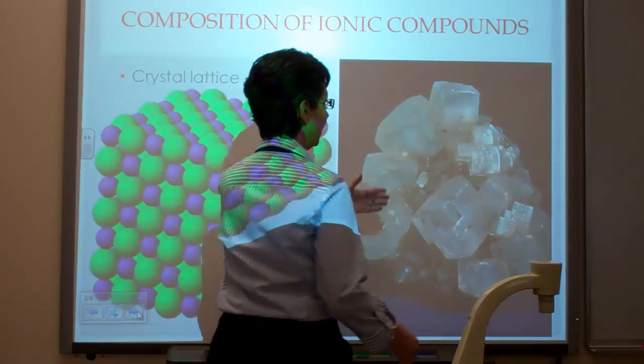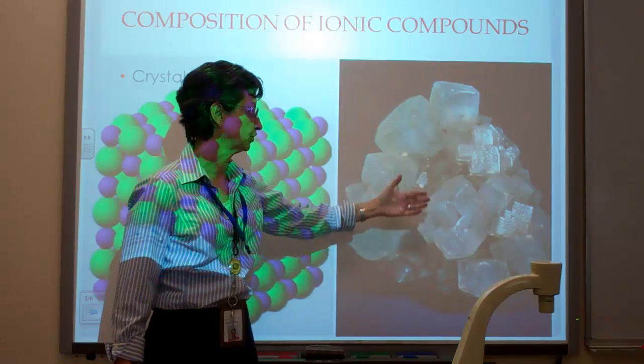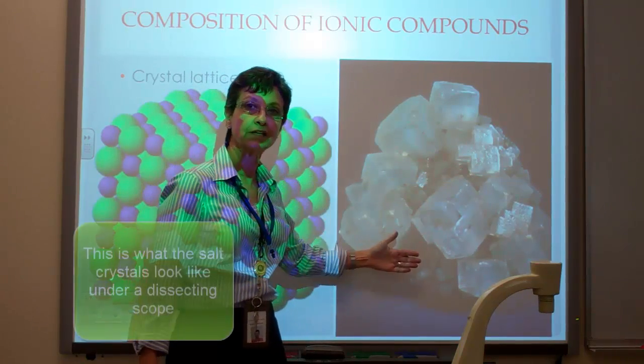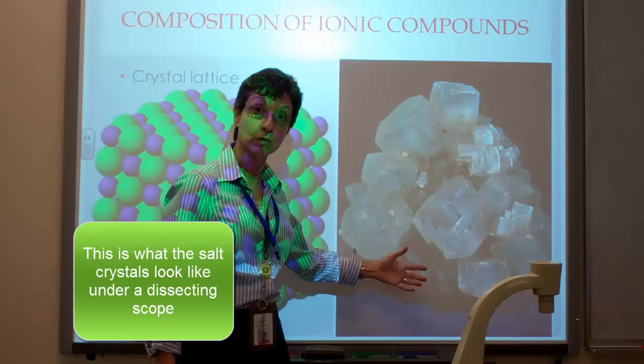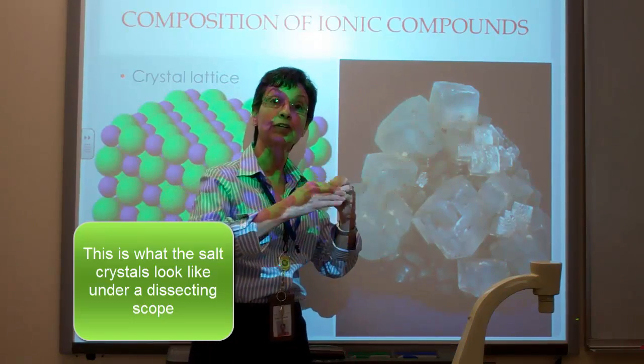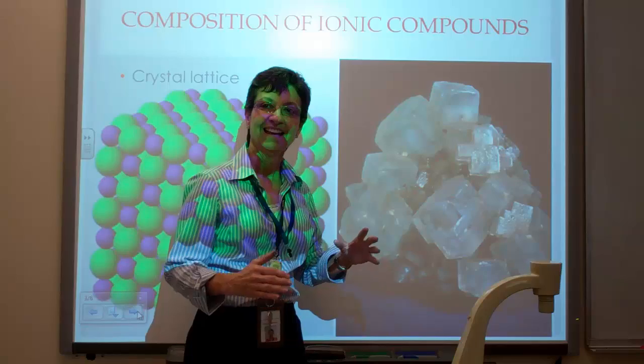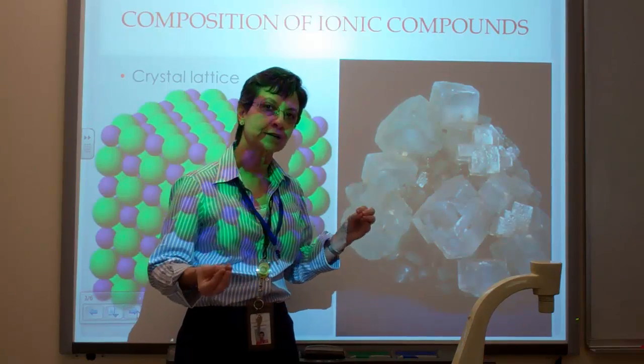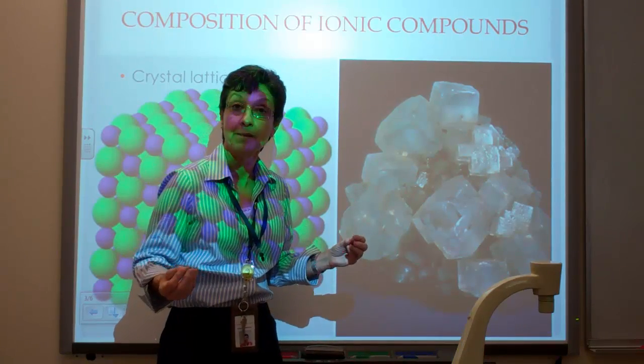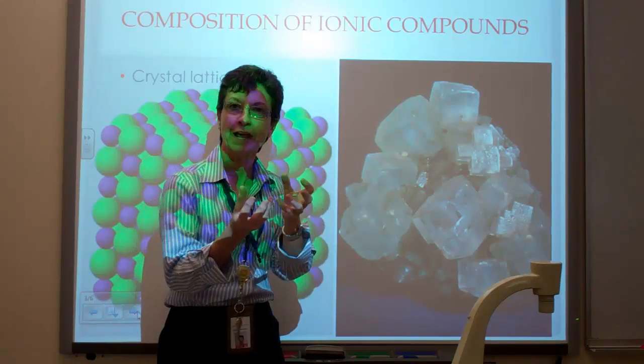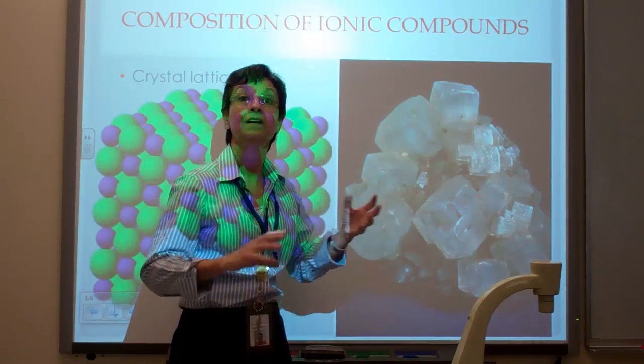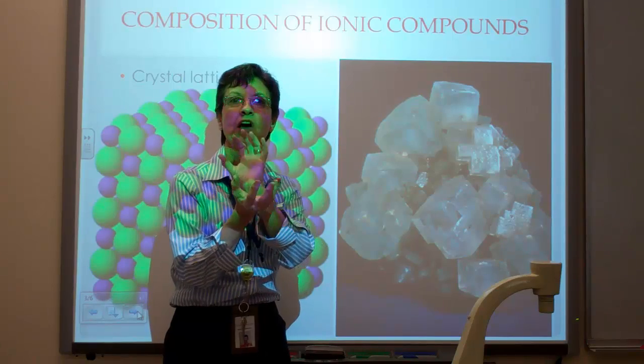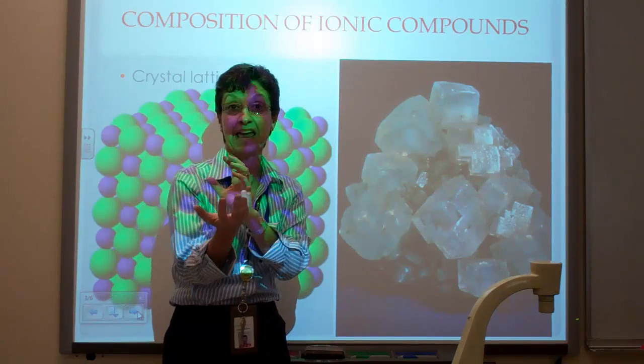Here on this side, I have what it actually looks like, what sodium chloride looks like under a microscope. It looks like it actually forms cubes. And every type of ionic compound forms a different shape of crystal simply because of how those atoms are arranged in this crystal lattice.